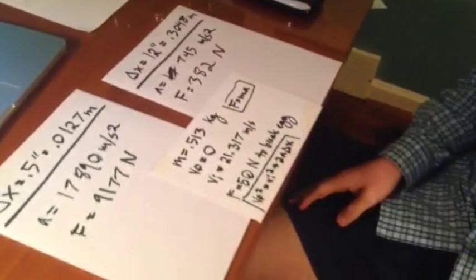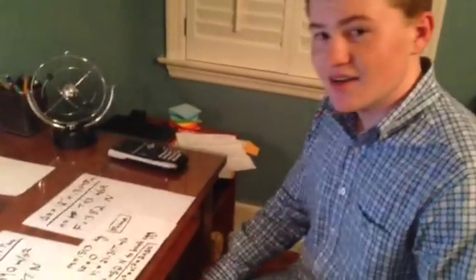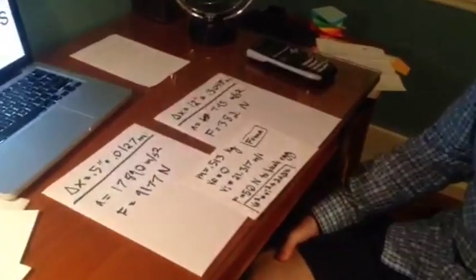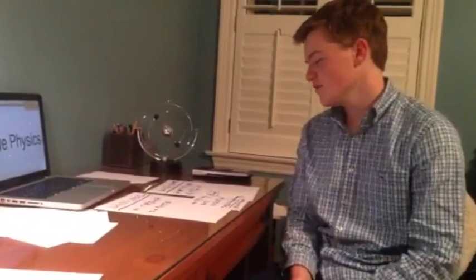With an upright fall, the conical structure would have channeled air into the parachute and significantly decreased the terminal velocity. Thus, decreasing the velocity upon impact and therefore decreasing the force applied to the eggs.